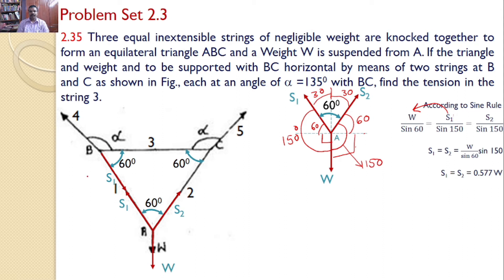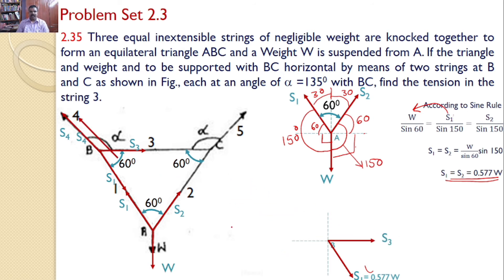The various forces acting at B are: the force in string 1 (S1), away from point B; the force in string 4 (S4); and the force in string 3 (S3). Transferring all three forces onto a separate XY plane: S1 equals 0.577W substituted directly. S3 is horizontal. The angle between S1 and S3 is 60 degrees, and the angle between S3 and S4 is alpha, which equals 135 degrees as given in the problem.